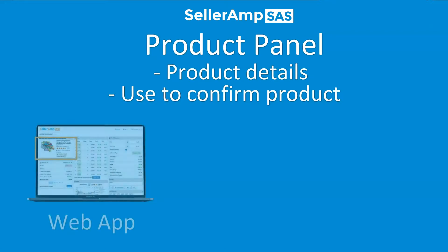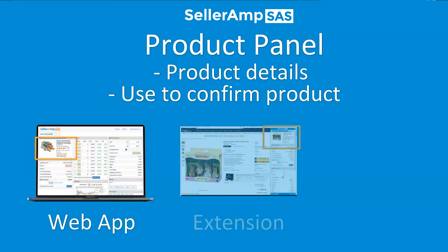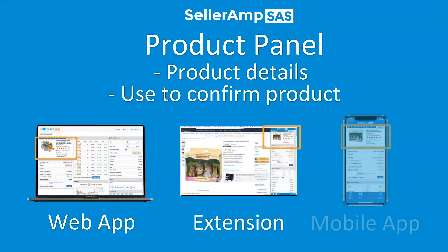The product panel is the first panel in SAS and, as usual, is available in all tools — web app, extension, and mobile app.